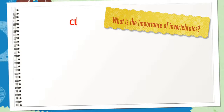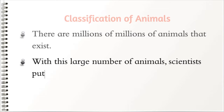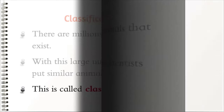There are millions and millions of animals that exist. With this large number of animals, scientists put similar animals in groups. This is called classification.